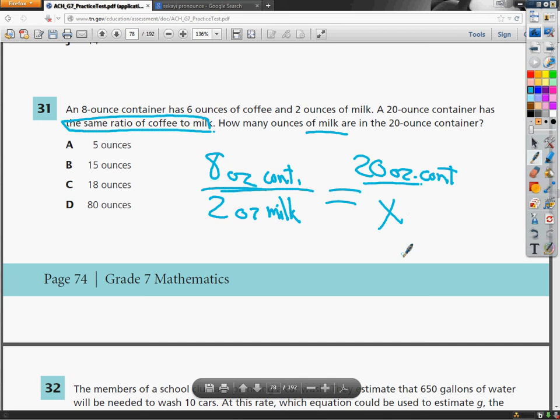So if I have 3 numbers, need the 4th thing. I'm talking about 2 things I can figure out by setting up a proportion. And I'm just going to do cross products here, cross multiply and divide. I do 2 times 20 which gives me 40. And then I divide by the 8. So the x value is 5. So I have 5 ounces of milk in that container.